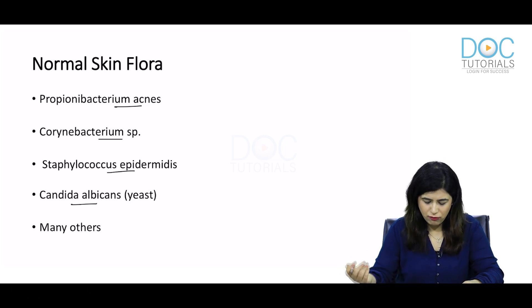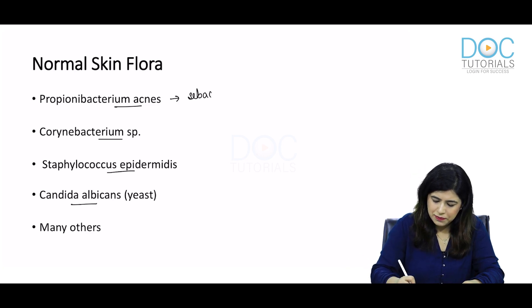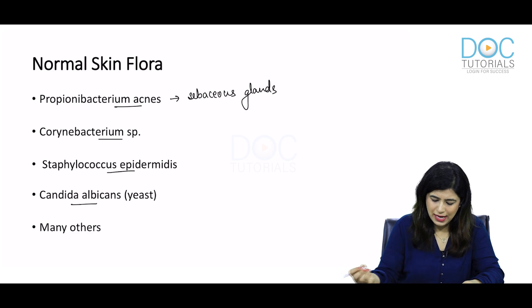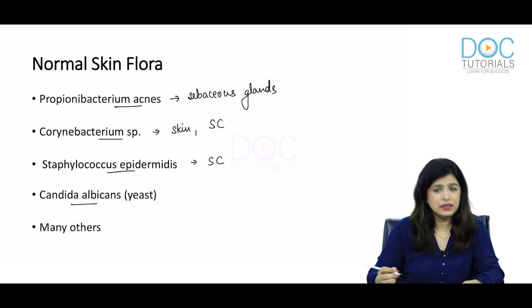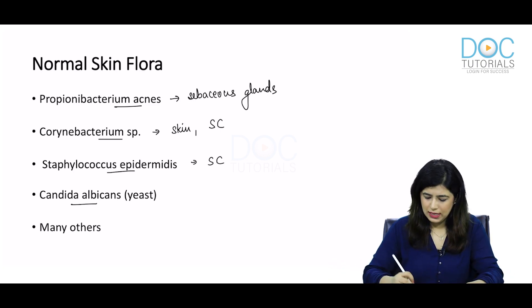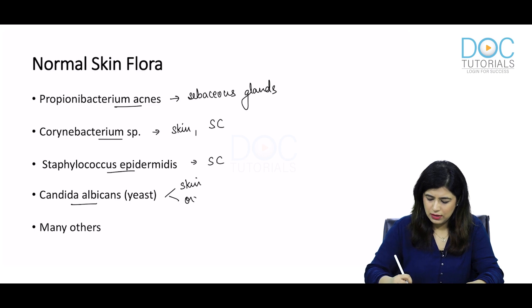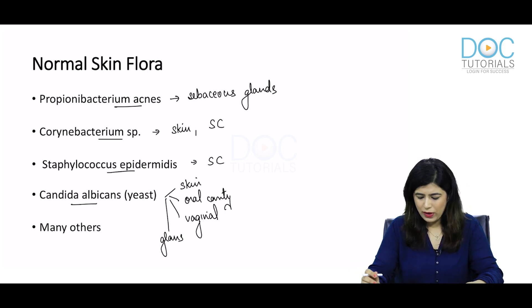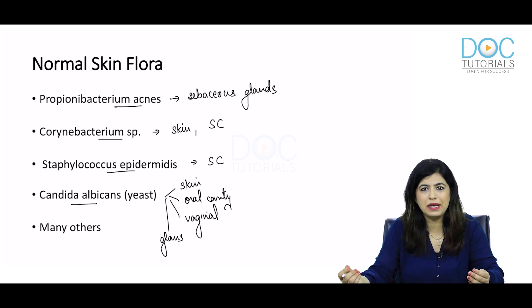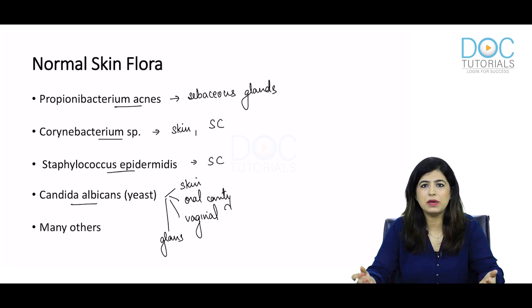The important ones are these four. P. acnes lives in the sebaceous glands. Corynebacteria live in the skin, in the stratum corneum, as do Staph epidermidis. Candida is present in the skin, in the oral cavity, in the vaginal mucosa, the glans penis in men. So every mucosa — whether oral, genital (including vaginal, anal, penile) — all these mucosae have Candida as normal commensals, and it is even present on the skin. So these are the normal skin flora.